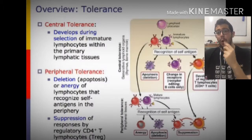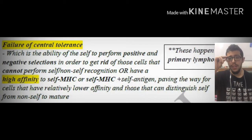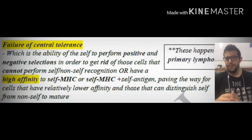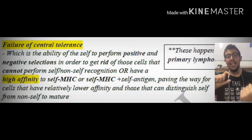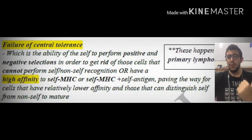Let's dive a bit more into what happens if we have a problem within central tolerance and peripheral tolerance. Failure of central tolerance can lead to an abnormally high affinity to a self-MHC or self-MHC plus self-antigen, or an inability to distinguish between self and non-self antigens. As mentioned previously, this is going to lead to autoimmune diseases.